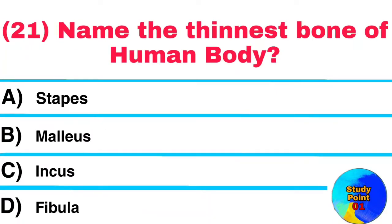Question No. 21. Name the thinnest bone of human body. Answer: Fibula.